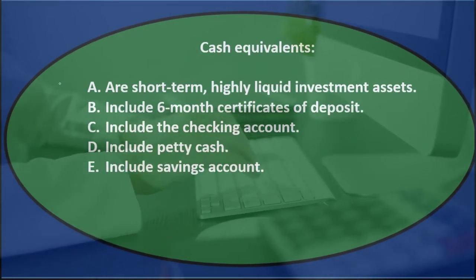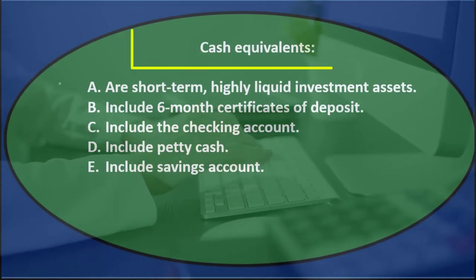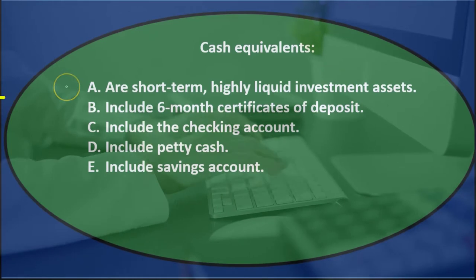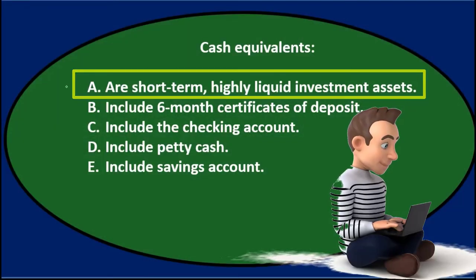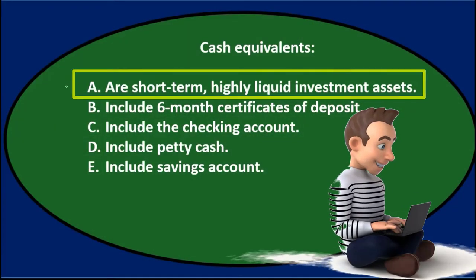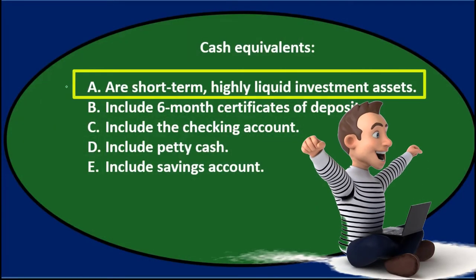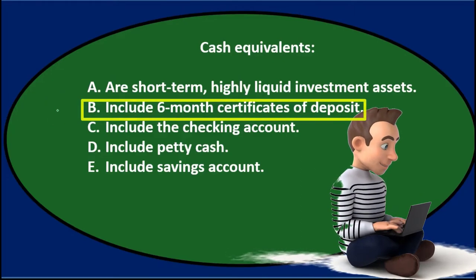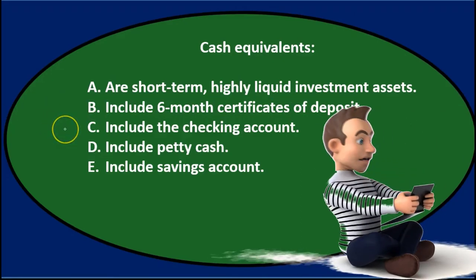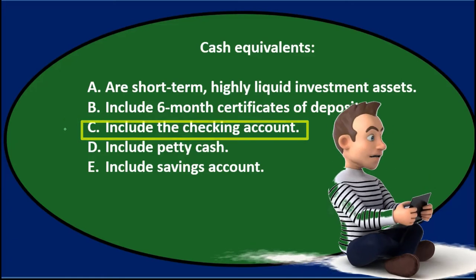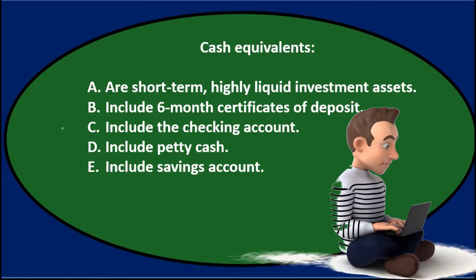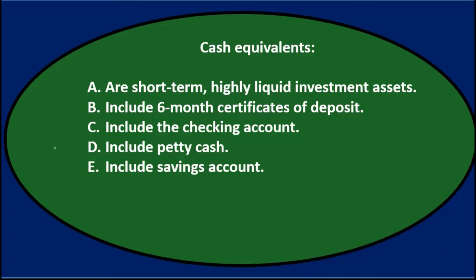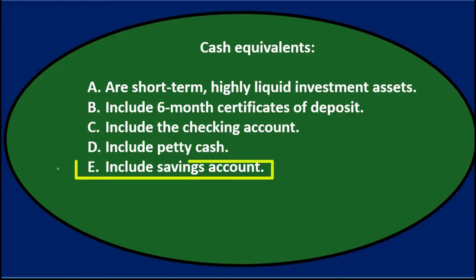Next question: cash equivalents — A. are short-term, highly liquid investment assets. B. Include six-month certificates of deposit. C. Include the checking account. D. Include petty cash. Or E. Include the savings account.